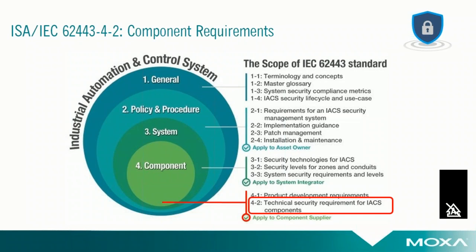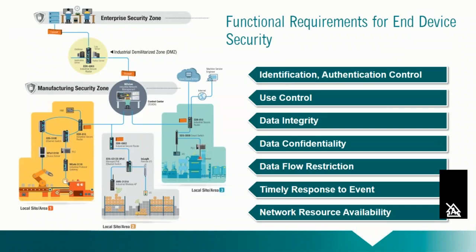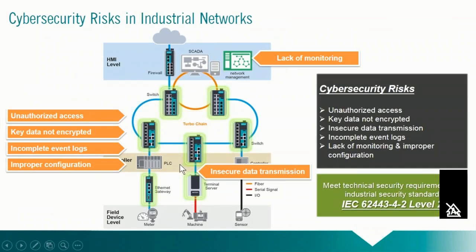Let's dive deeper into the 62443-4-2 standard. This covers what types of security elements you should be looking for when buying new industrial control communications equipment. There are seven different functional requirement areas outlined in the system requirements of the 3-3 document. The 4-2 document specifies how the specific requirement enhancements are called out in each of these areas based on the security level compliance selected — SL1 through SL4.